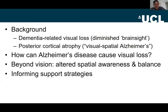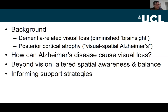Crucially today I'll be talking about difficulties with diminished brain sight rather than diminished eyesight. I'll be talking in particular detail about posterior cortical atrophy, sometimes referred to as a visual variant of Alzheimer's, characterized by early and progressive loss of visual functions. I'll discuss how Alzheimer's disease can affect different people in very different ways, and later discuss disturbances in spatial awareness and efforts to apply our understanding to inform strategies for maximizing independent activities.